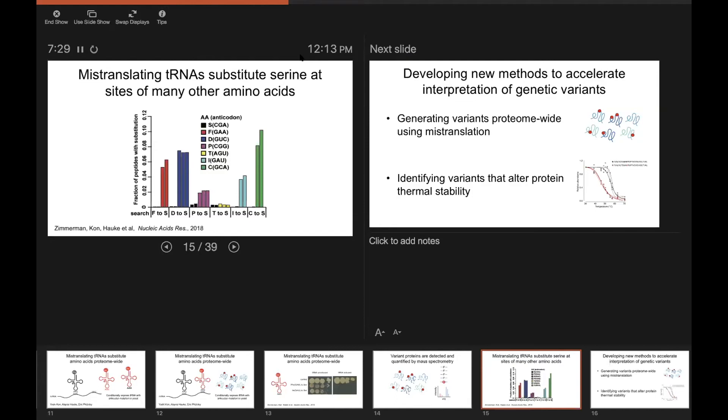we were able to detect the expected serine misincorporation events by mass spectrometry. And so what I'm showing here is the percentage of peptides with a serine substitution compared to the wild-type amino acid. And what you can see is that for all of these, you get between about five to maybe 10 percent of peptides have this substitution.